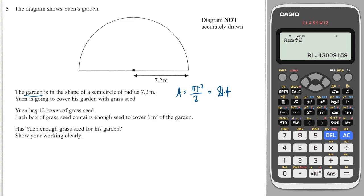Now, we have 12 boxes of grass seed and each box contains enough to cover 6 meters squared. So the amount of seed which we have, we have 12 multiplied by 6 and 12 times by 6 is 72. So do they have enough grass seed? Well, no, they don't. And that is because 72 is less than 81.4.